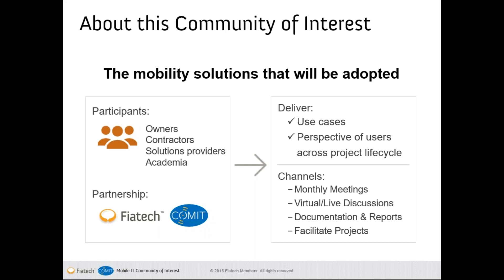We have been delivering use cases and industry perspectives through various channels, including monthly meetings such as this one, both virtually and live. Documentation and reports from these gatherings are also available to help further the community and facilitate the creation of research and development projects within both organizations. This community is a joint venture between Fiat Tech and Comet. Fiat Tech is a member-based organization with an objective of improving the productivity of capital projects through the deployment of technology. Comet is a UK-based organization whose principal aim is to learn from experience to deliver measurable business benefits in terms of adoption of mobile technologies.